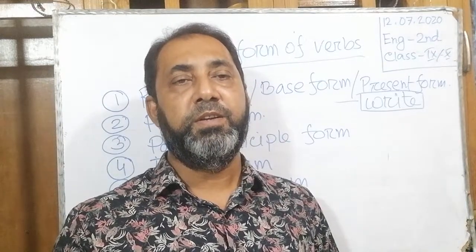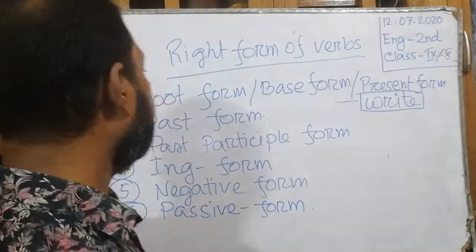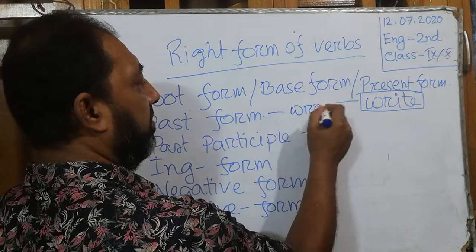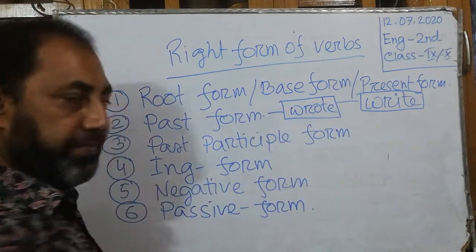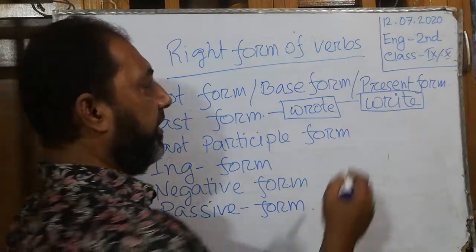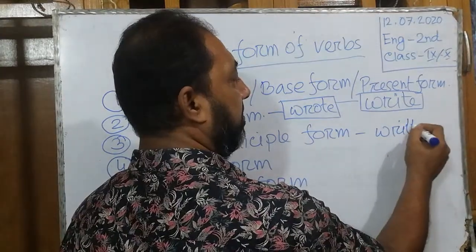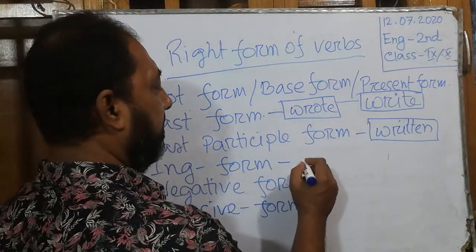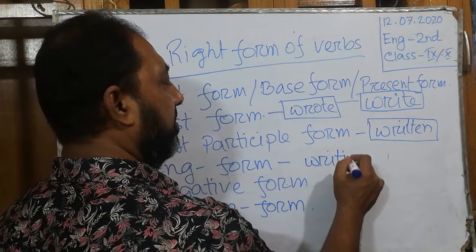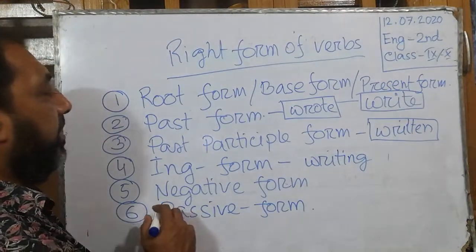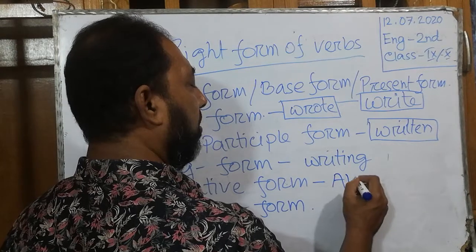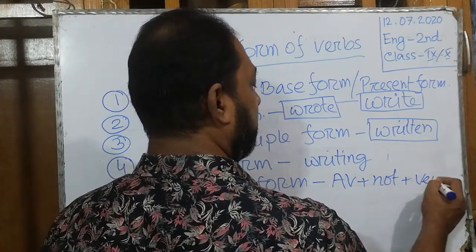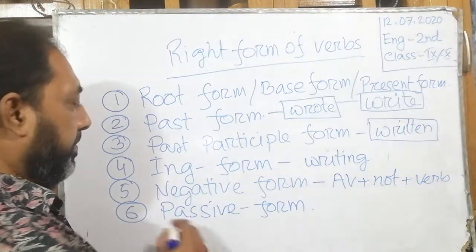Suppose for one example: 'write.' Write, put, read, walk, run — these are the present form, the base form, and the root form. Now for 'write,' the past form is 'wrote,' the past participle form is 'written,' the ing form is 'writing' — just add ing with the base form. Negative form means auxiliary verb plus not plus verb, and then there is passive form.